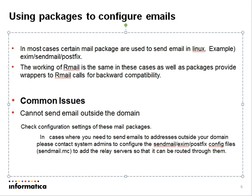When using these packages to send emails, it causes some common issues. The most common issue is not being able to send emails outside their own local domain or to a personal email ID. This is caused because your sendmail.mc configuration file needs to be modified by a system admin with root privileges to add a relay server for the domain you want to send to. If it's Gmail, it needs to be something like smtp.gmail.com in the sendmail.mc file. Unless that change is made, you won't be able to send emails to that domain.